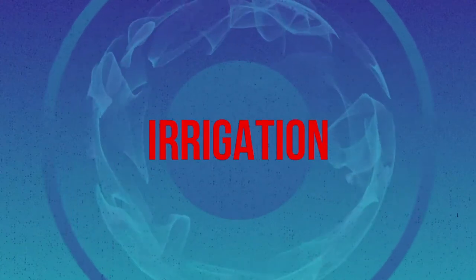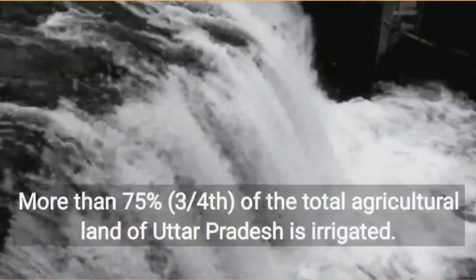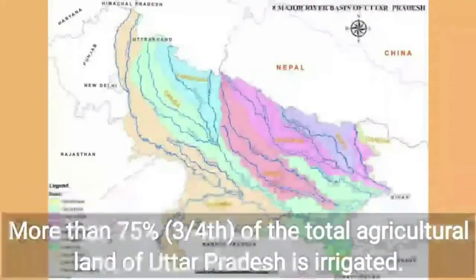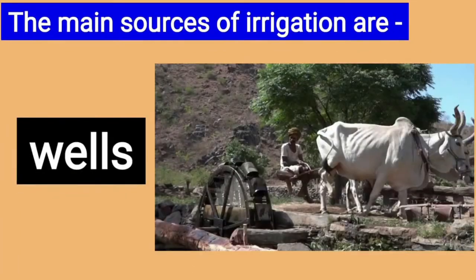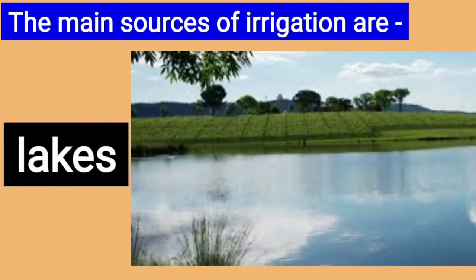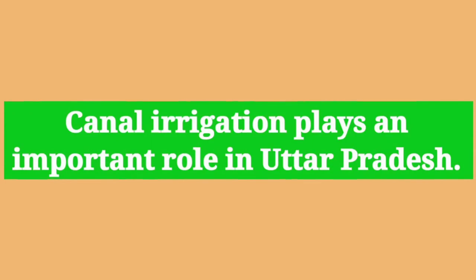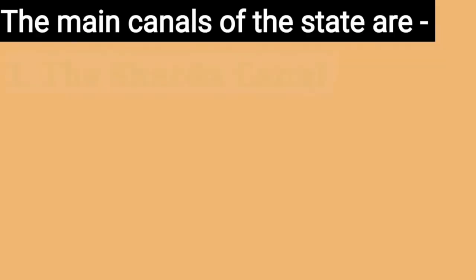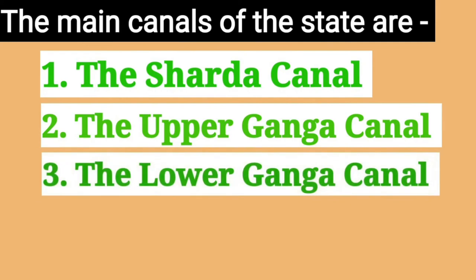More than three quarters of the total agricultural land of Uttar Pradesh is irrigated. The main sources of irrigation are tube wells, canals, wells, ponds, lakes etc. Canal irrigation plays an important role in Uttar Pradesh. The main canals of the state are the Sharda Canal, the Upper Ganga Canal, the Lower Ganga Canal, etc.